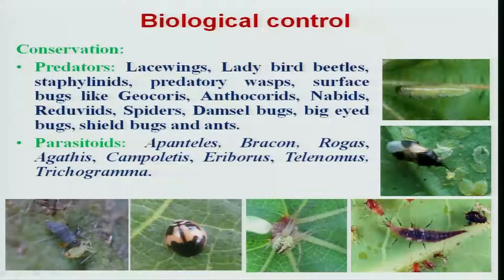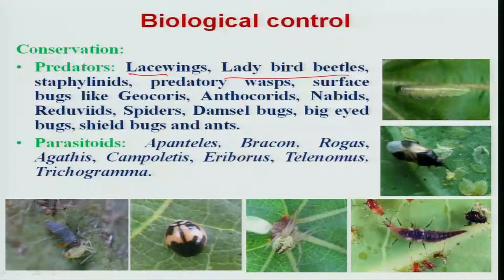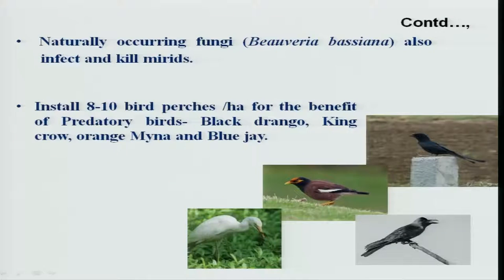Biological control is a very important method. It is essential to conserve natural enemies like lacewings, ladybird beetles, and spiders, which are abundantly occurring in the cotton ecosystem. These can be preserved by applying selective and safe insecticides. Parasitoids like Telenomus and Trichogramma can be augmented. Naturally occurring fungi and fungal insecticides like Beauveria bassiana can also be used to manage insect pests.